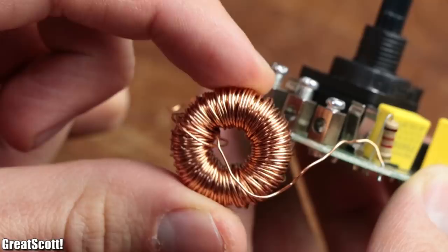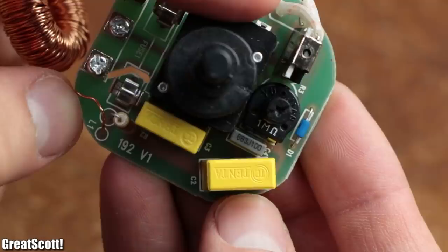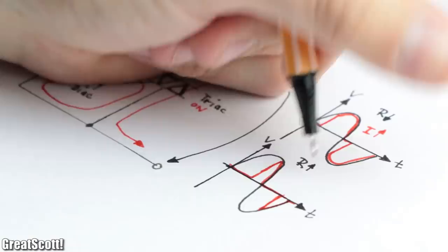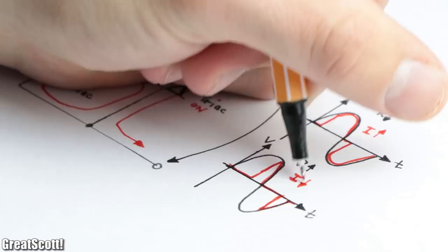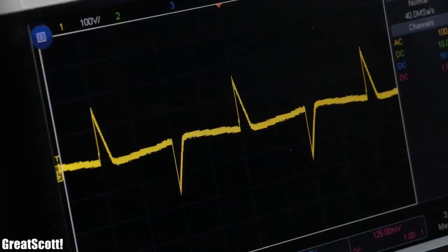Now of course the commercial dimmer got a couple more components to for example suppress noise and voltage spikes. But in a nutshell this is how such an analog phase angle control dimmer functions. And after hooking up the circuit to the oscilloscope we can see that the waveform of the mains voltage applied to our light bulb pretty much looks like the theory we just talked about.